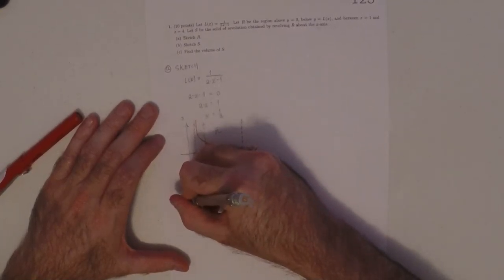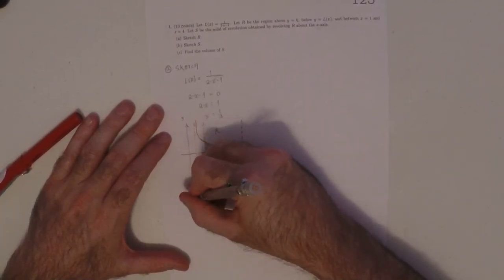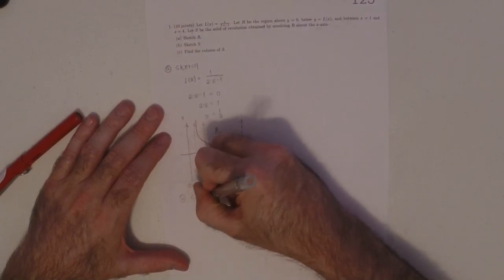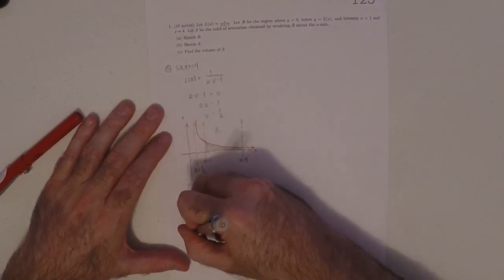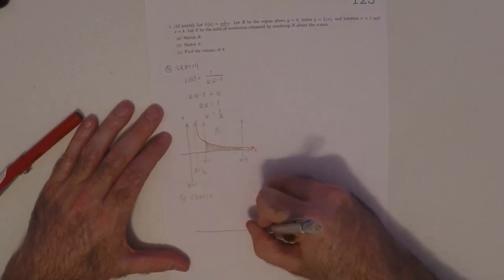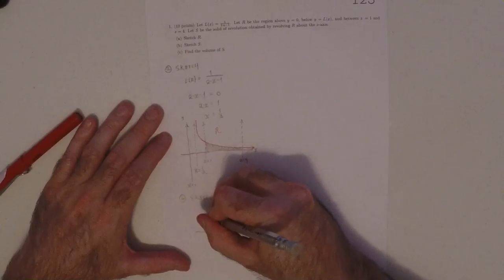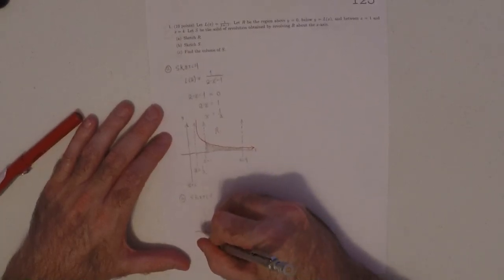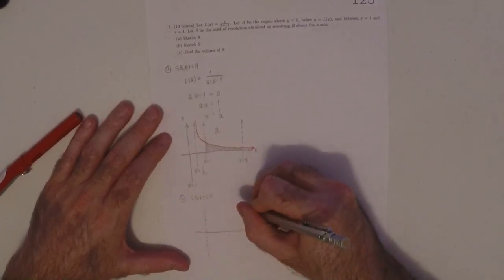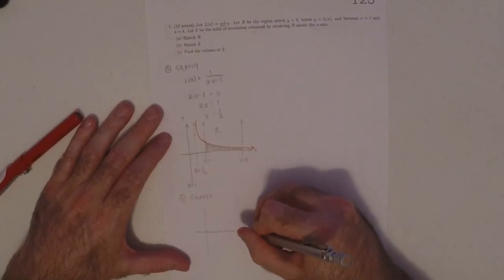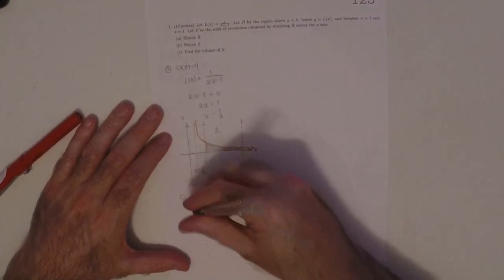And then, we want to sketch the solid. The trick is to, you know, take these bounds and you need to make them symmetric above and below.